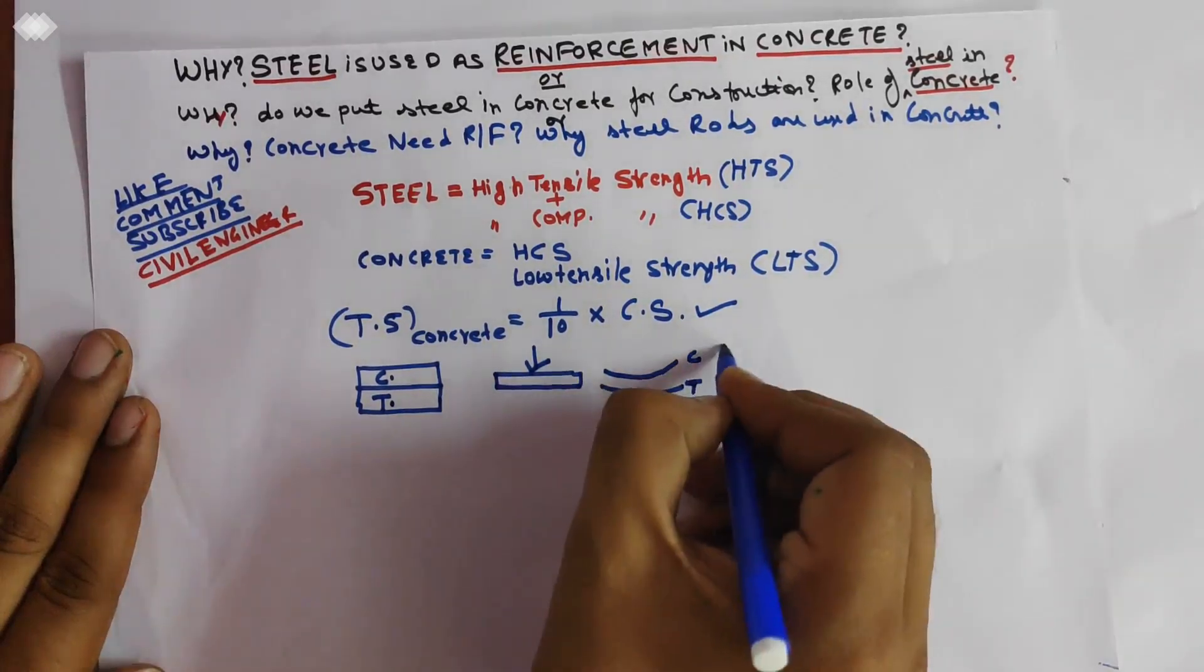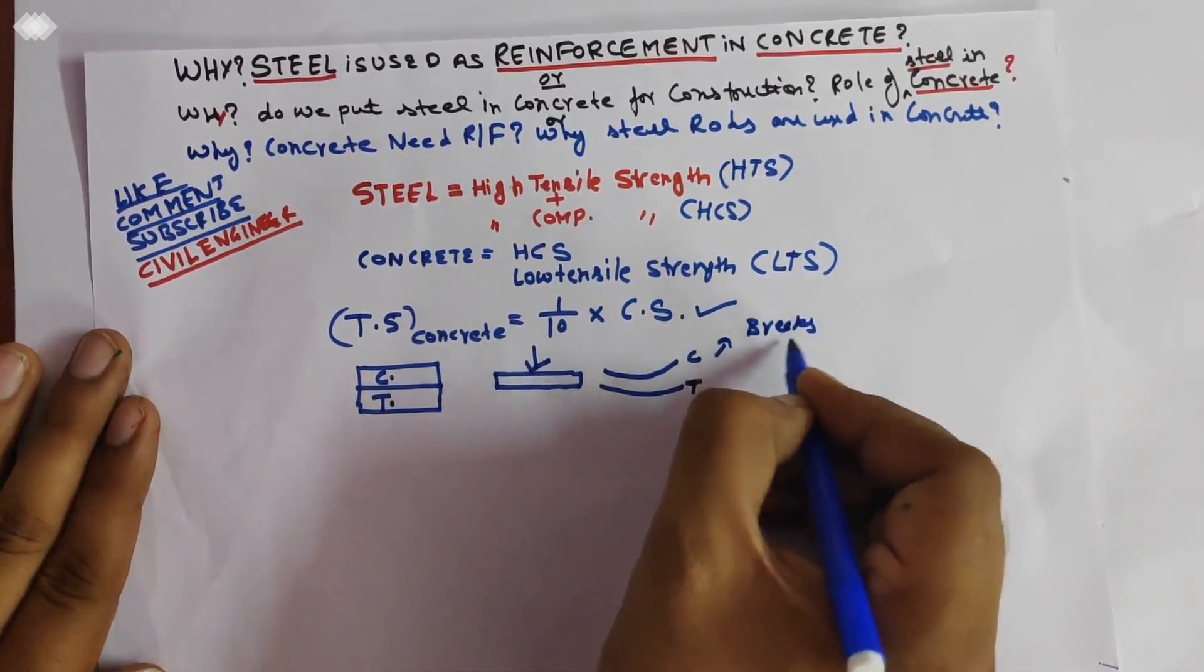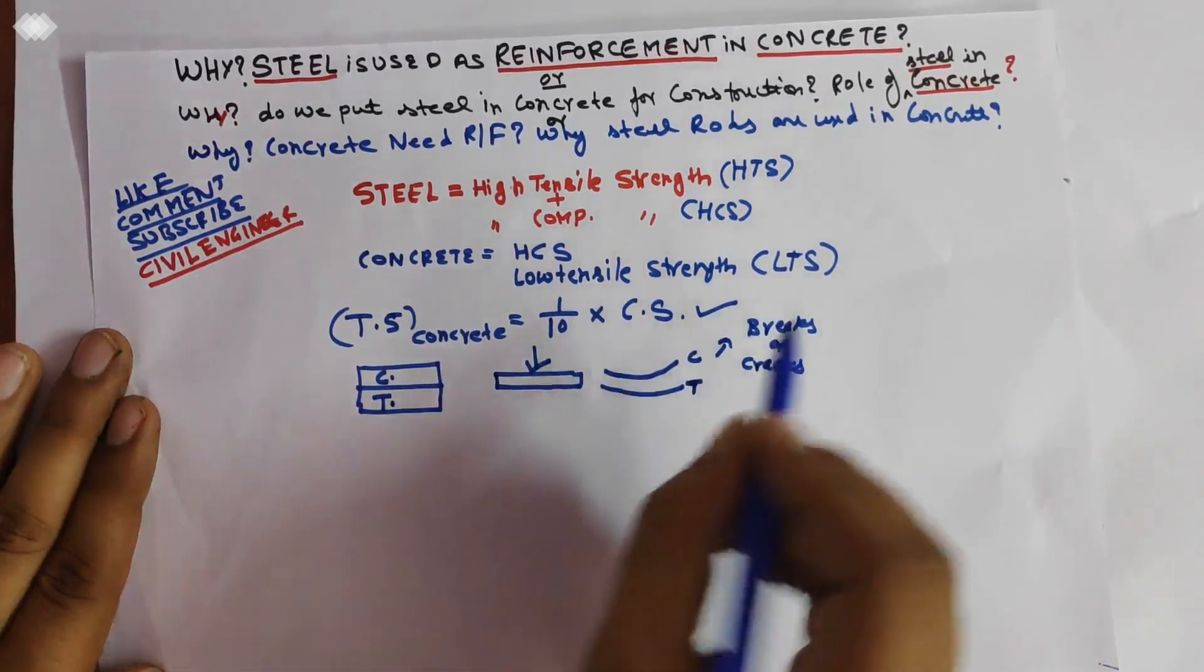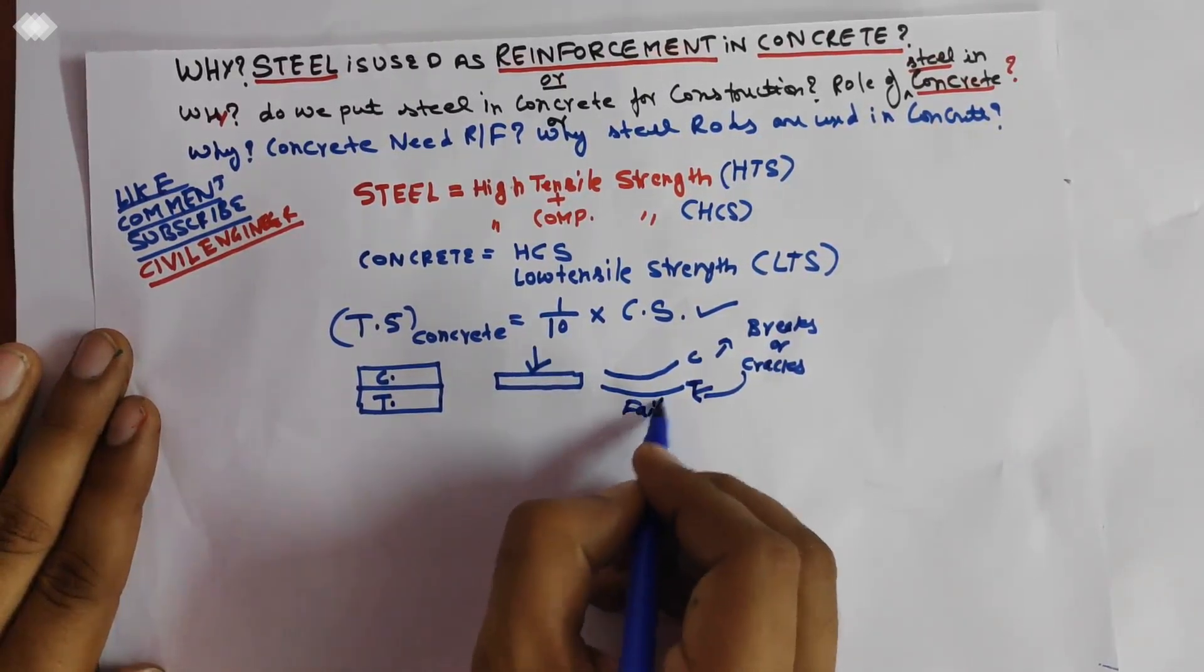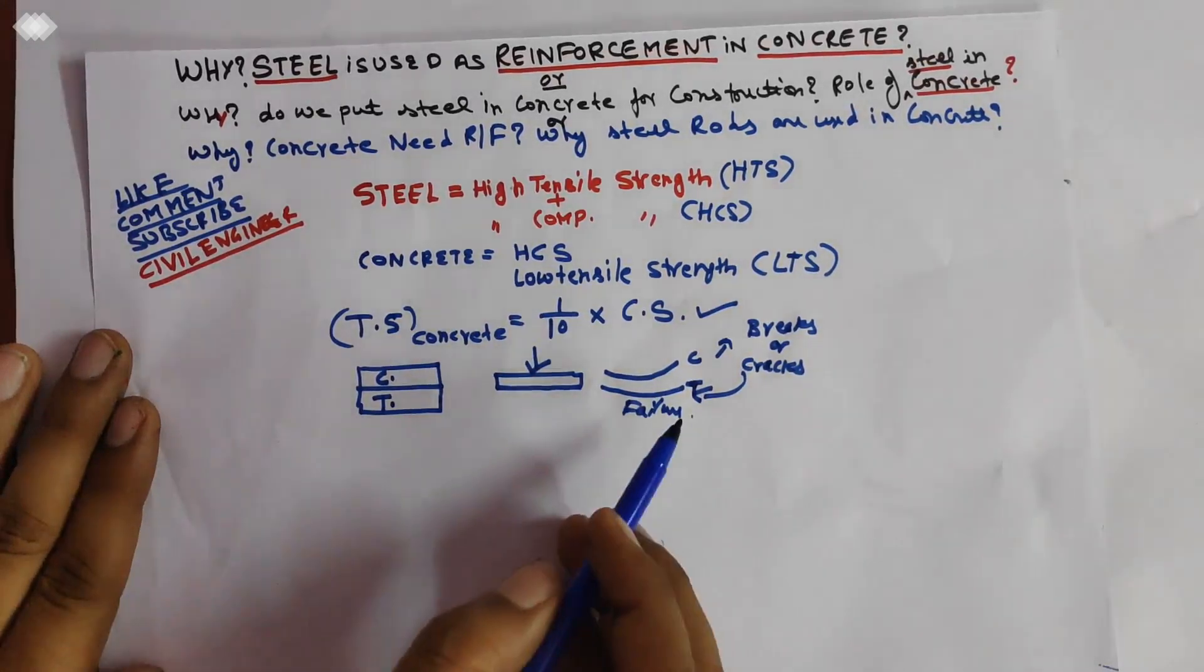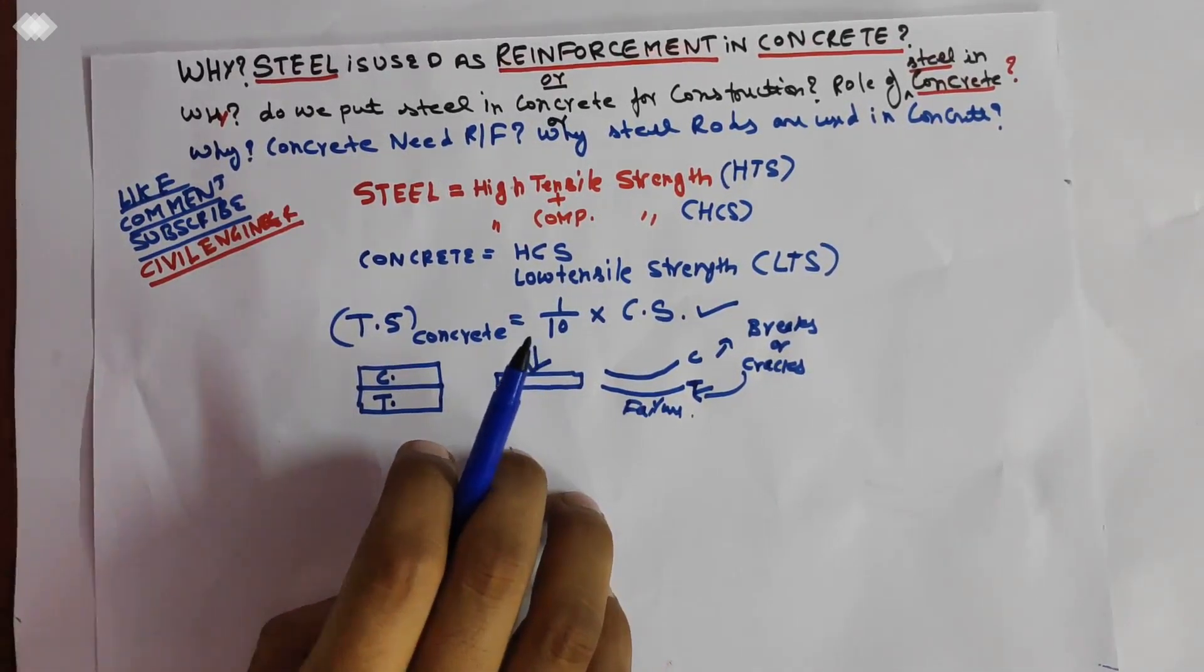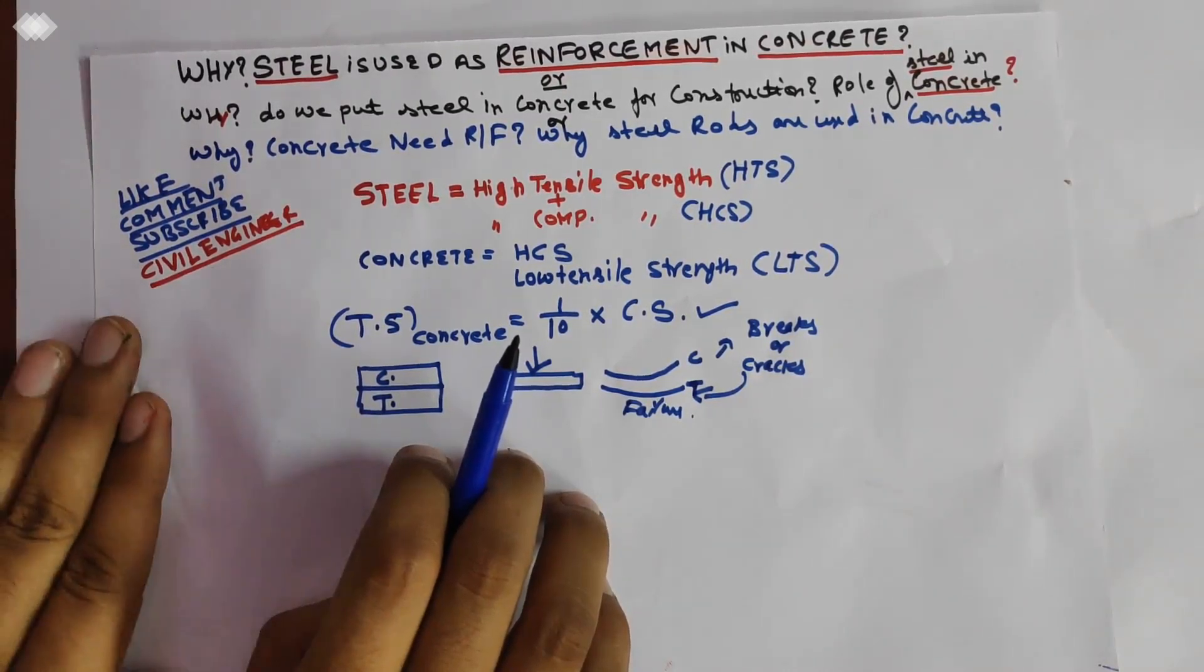So the beam breaks, cracks, and this causes a failure at the bottom of the beam. So at the bottom of the beam we provide steel bars.